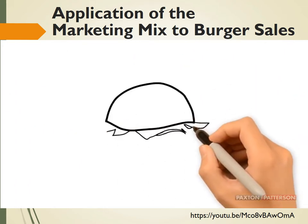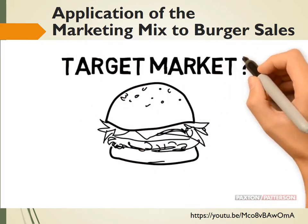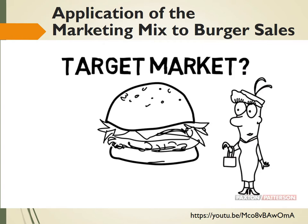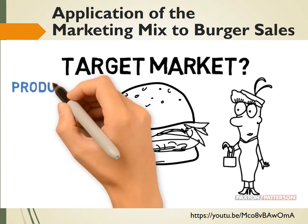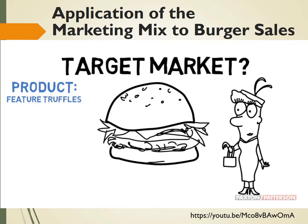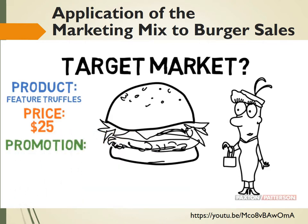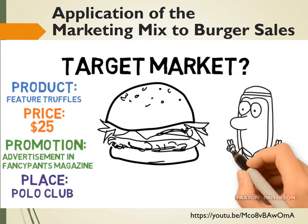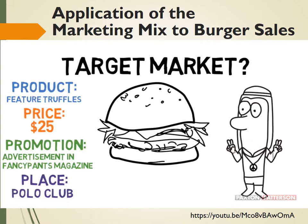Let's say you want to sell hamburgers. First, you need to know your target market — who are you going to sell hamburgers to? Your target market will affect your 4Ps. For a high-end target market, you'll want a very high-end hamburger. Consider a product that features truffles — super expensive stinky mushrooms. You're going to have to charge a lot because your cost will be high, around $25. A good promotion might be an advertisement in Fancy Pants Magazine, and a perfect place to sell the hamburger would be at the Polo Club. But what if we have a different target market? This marketing mix won't work for everyone.